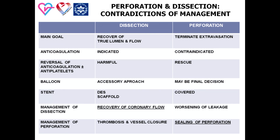A combination of dissection and perforation raises special management challenges. Treatment of dissection requires augmented anticoagulation and antiplatelet regimens that are absolutely contraindicated for perforation. Recovery of coronary flow in cases of dissection could lead to worsening of extravasation. Use of reversal anticoagulation and antiplatelet agents together with prolonged balloon tamponade of the perforation site could cause thrombosis of the dissected artery followed by vessel closure. Dissection-related slow flow, on one hand, could diminish extravasation but, on the other hand, challenges sealing options for perforation.